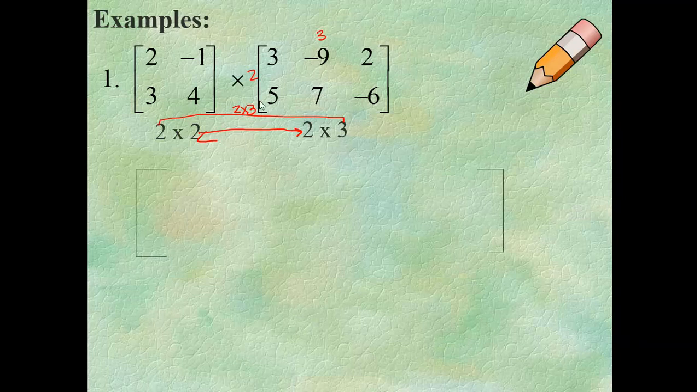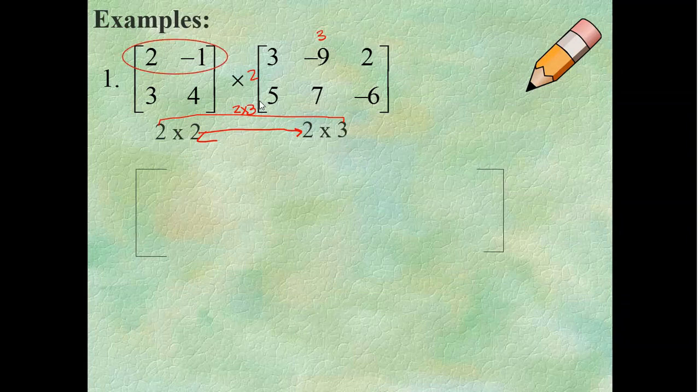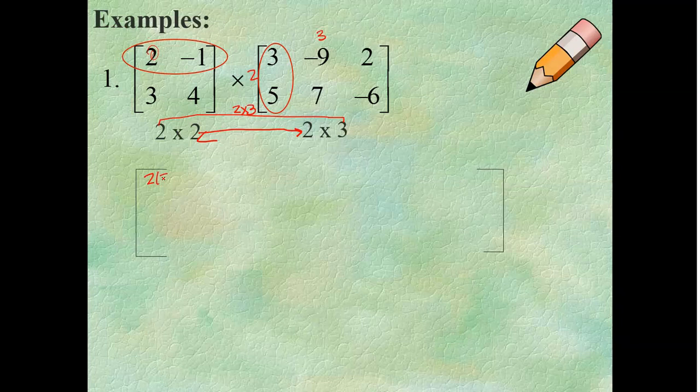Now, how are you going to multiply this? This is how you're going to do it. I recommend having multiple colors. So, we're going to multiply 2 and negative 1 by 3 and 5. So, what's going to happen? You're going to multiply the 2 by the 3. So, that would be 2 times 3. And you're going to add the other two. So, negative 1 times 5. Okay? So, that's your very first element.